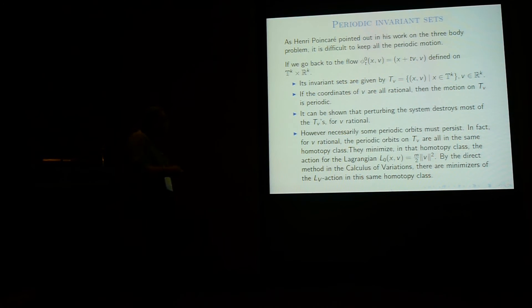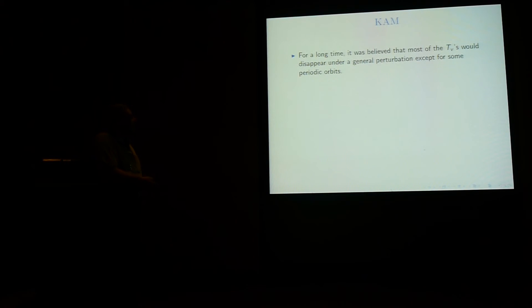However, necessarily some periodic orbit must persist. And this is a fact coming from calculus of variation. If v is rational, the periodic orbits are all in the same homotopic class. They minimize action in that homotopic class for this Lagrangian, and by the direct method of the calculus of variation, there are minimizers for Lᵥ action in the same homotopic class. I'm cheating a little bit, because you have to show it's bound from below. Lᵥ action, you might have problems with action going to minus infinity and things like that. But I mean, this is the reason why you get some periodic.